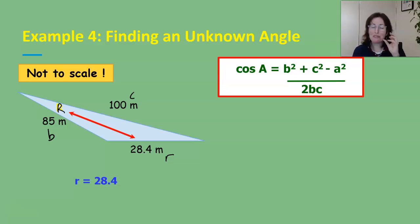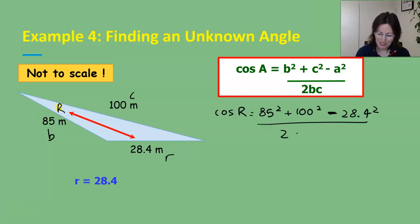Now let's substitute those in. Here's our formula, it's really handy to write the formula out every time then you don't have to think so much you just have to substitute the numbers in. Instead of cos of A this time it's cos of R and side b is 85 squaring that add on 100 squaring that subtract side a or side r in this case 28.4 squared all over 2 times by b times by c.